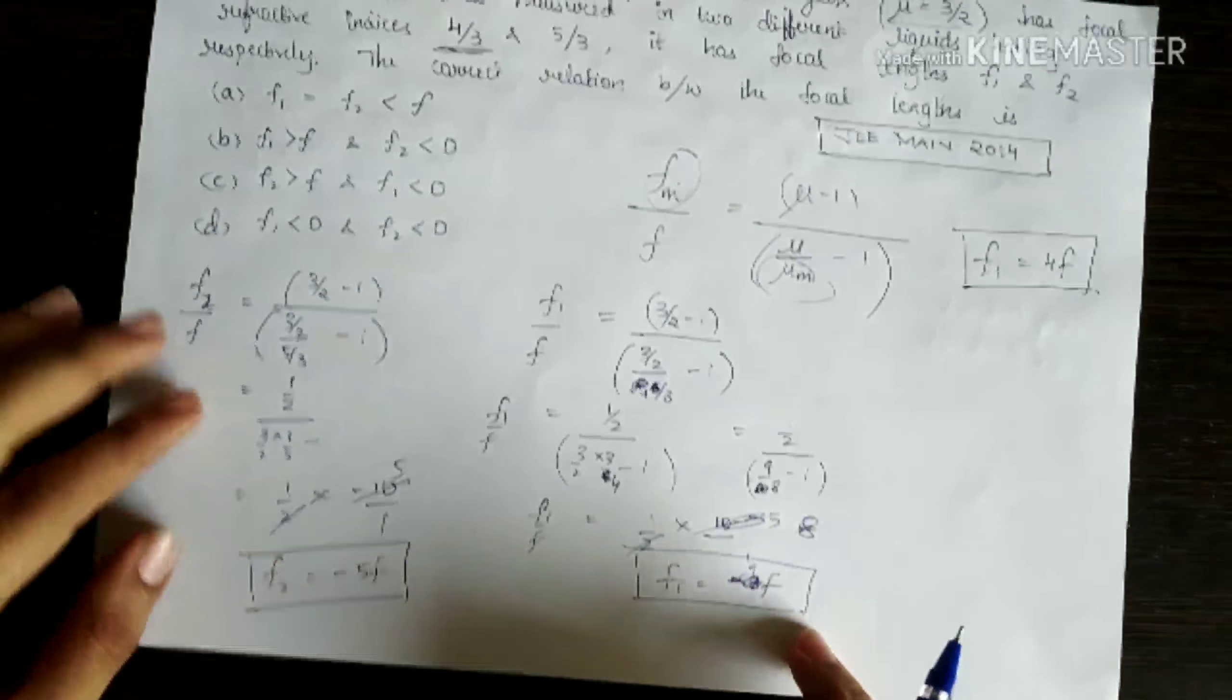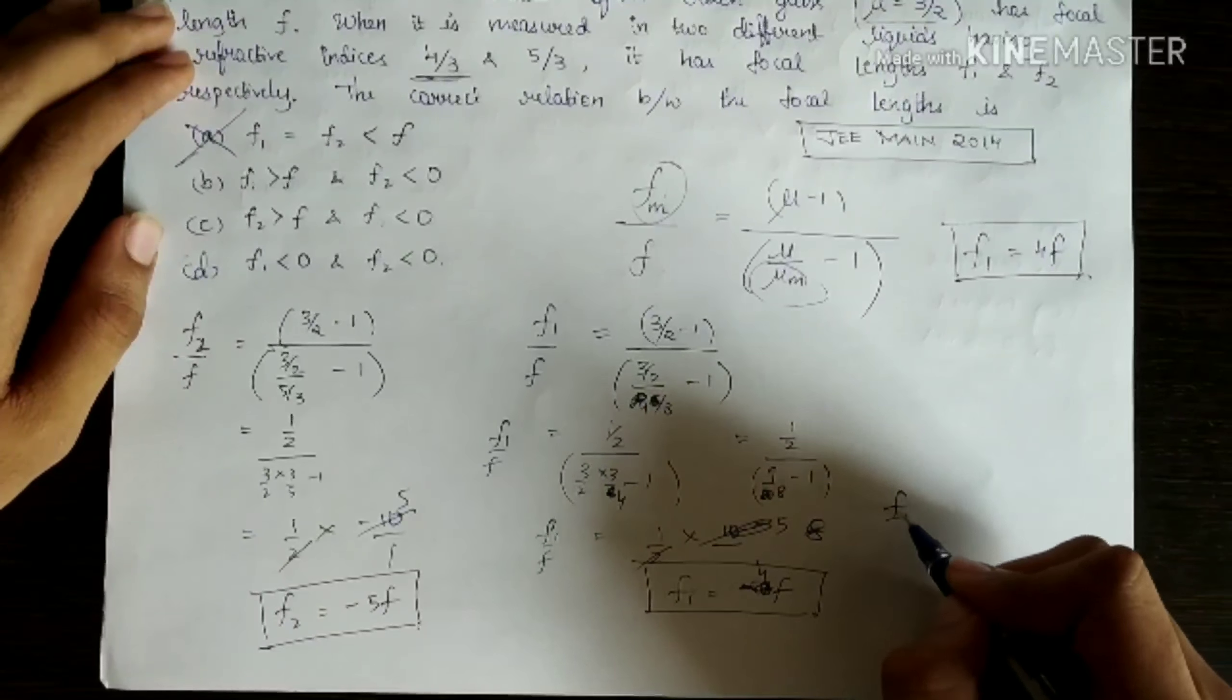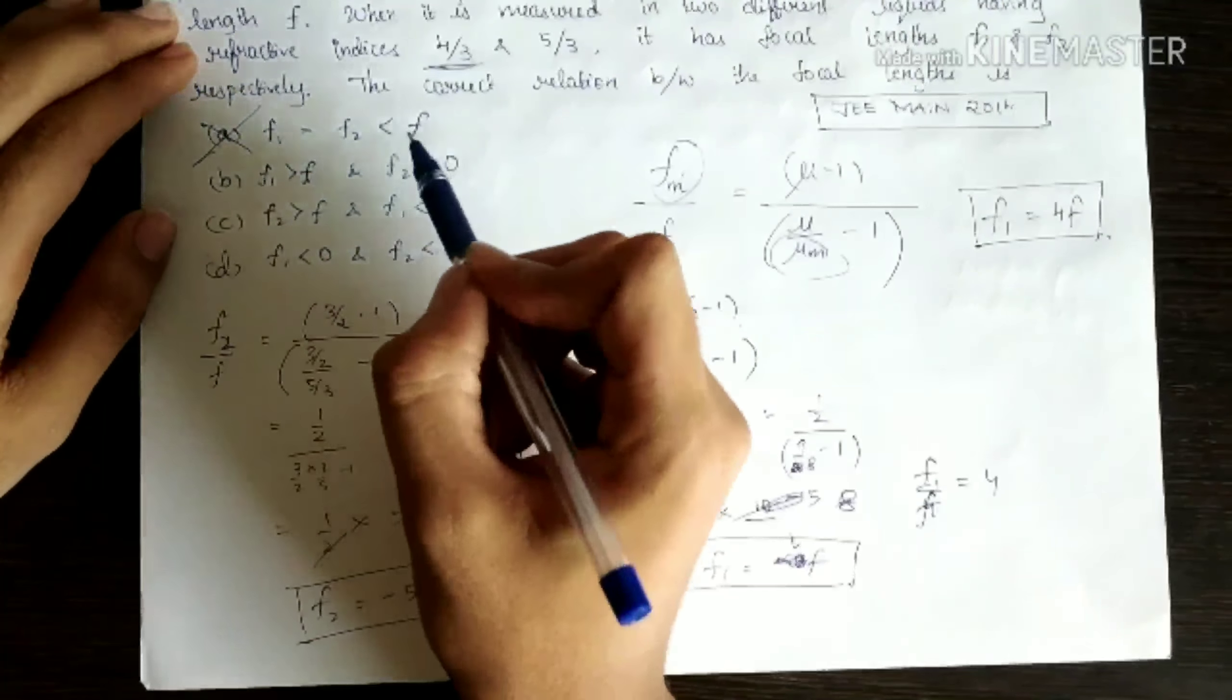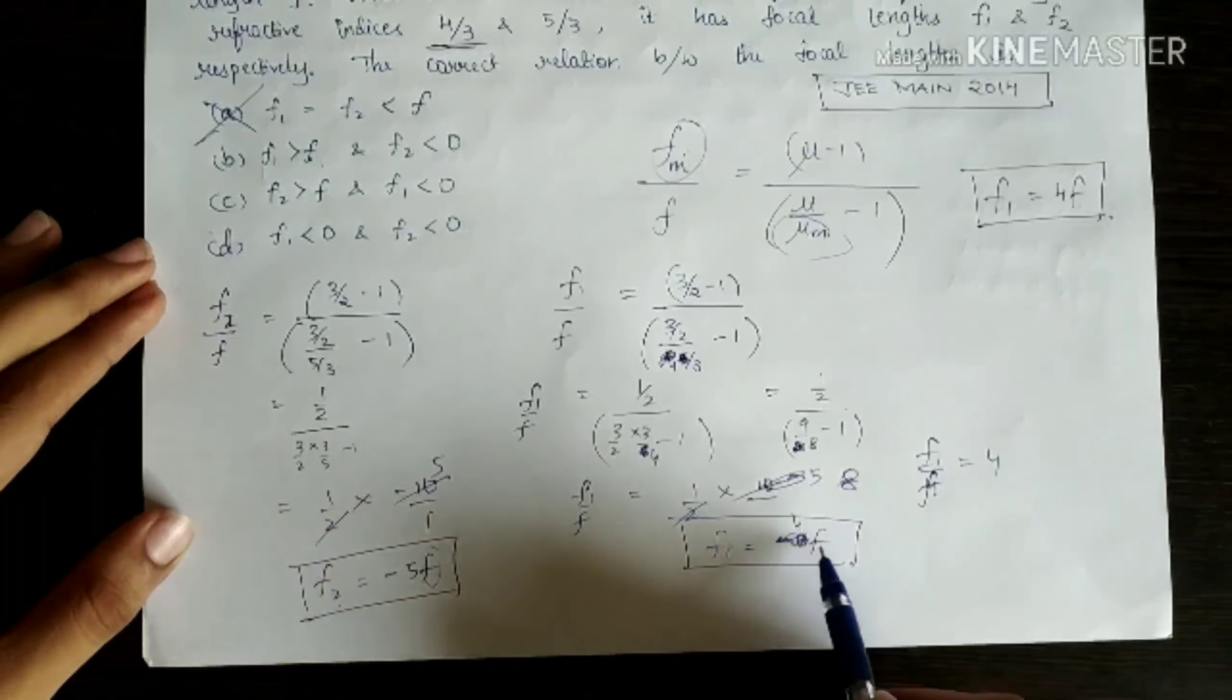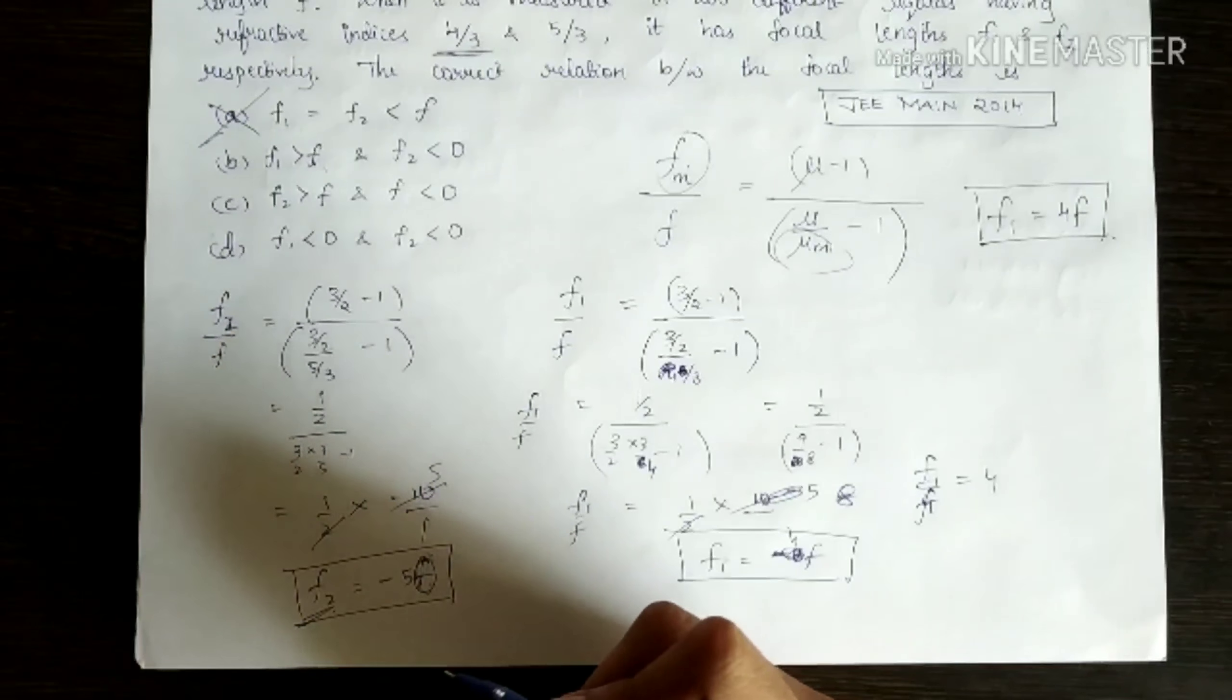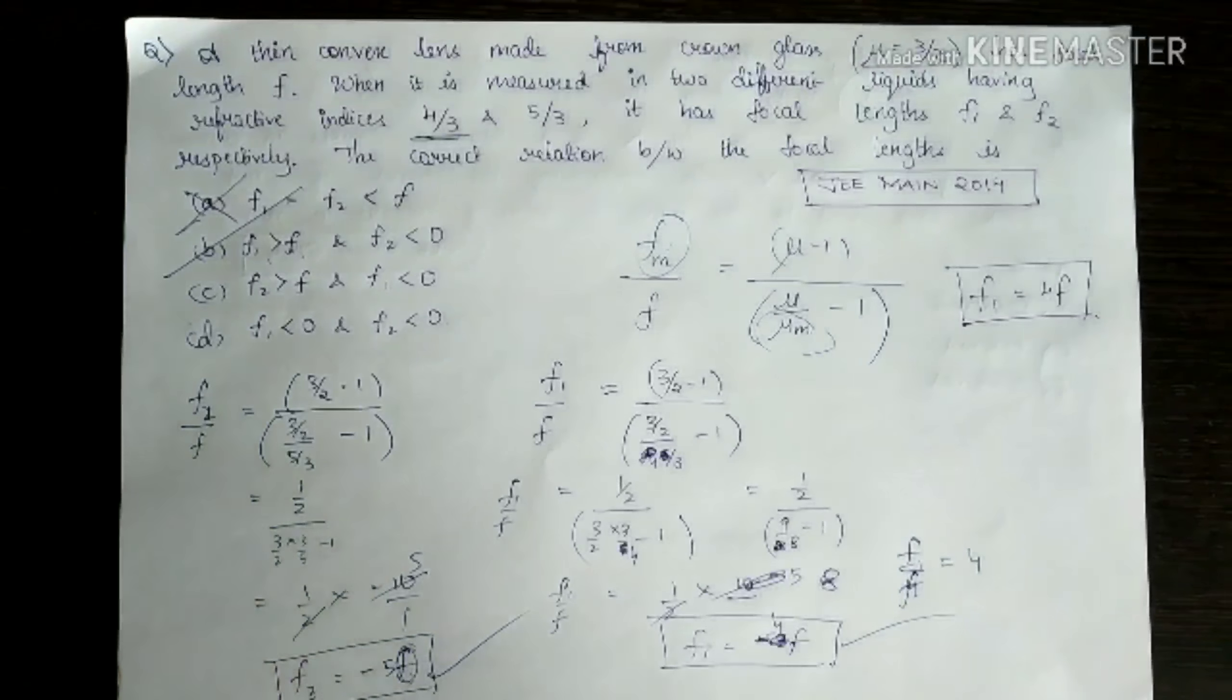Now we got these two relations, we will check carefully. This is not at all the case because F1 is not equal to F2, we are clearly seeing that. And F1/F is 4, that means F1 is greater than F. This has to be the case, and F2 is less than 0 because we are getting a negative sign. Since from this case we don't have F less than 0, so F2 has to be less than 0 because F is positive. So F1 is greater than F from this case, and F2 is negative from this case, and hence option B will be our right answer. Thanks a lot for watching this video, thank you.